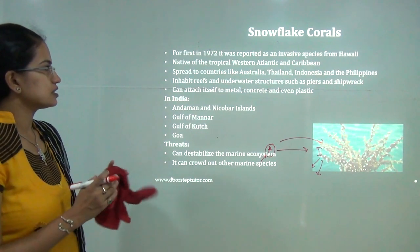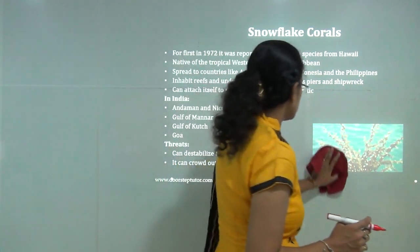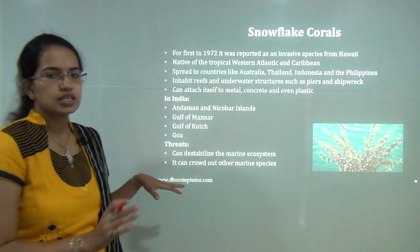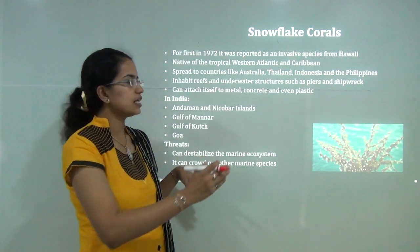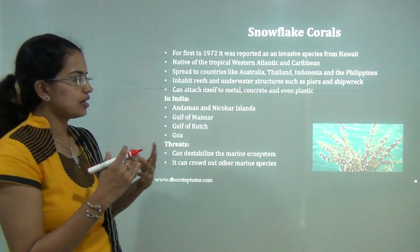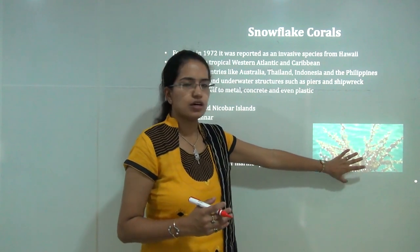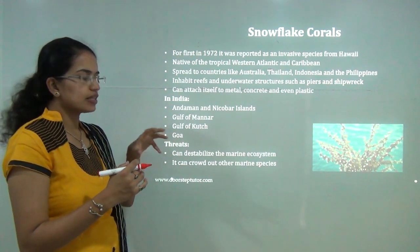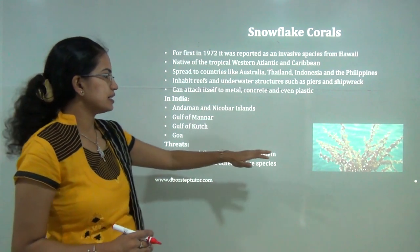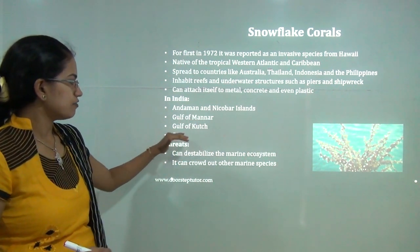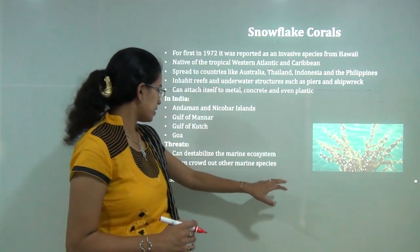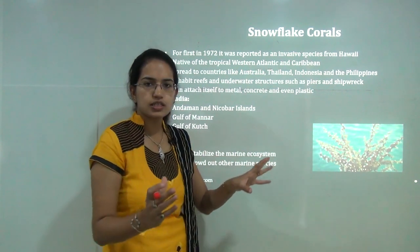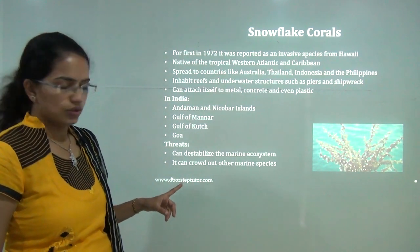Snowflake corals were first recorded in 1972. They are native to the Western Atlantic and Caribbean areas but are also seen in Southeast Asia — Thailand, Indonesia and the Philippines. They are sharp and prickly, able to attach to metal and even plastic substances. In India, they are commonly seen in the Andaman and Nicobar Islands, Gulf of Mannar, Gulf of Kutch, and Goa. They are a threat to the ecosystem because other organisms cannot crowd near them, and their prickly nature destroys nearby species.